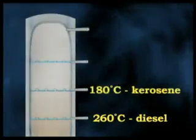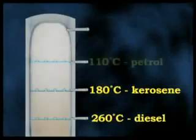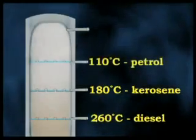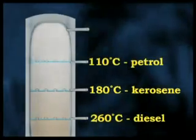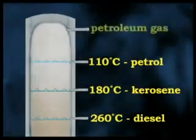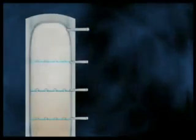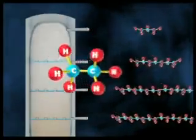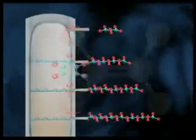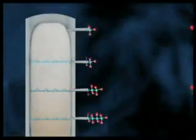At around 180 degrees, kerosene condenses out. Petrol or gasoline condenses out at around 110 degrees, while petroleum gas is drawn off at the top. The distilled liquid from each level contains a mixture of alkanes, alkenes and aromatic hydrocarbons with similar properties.